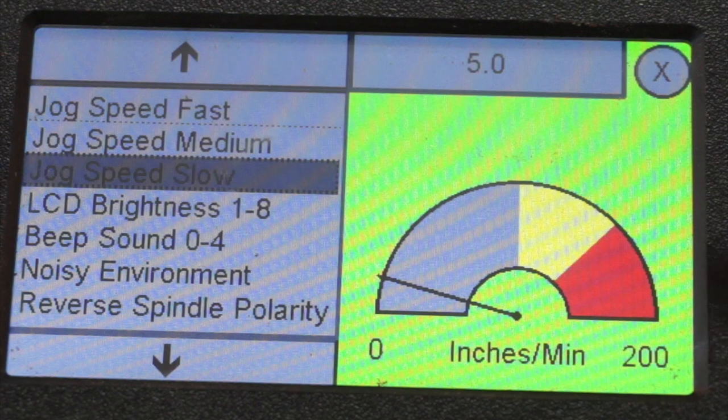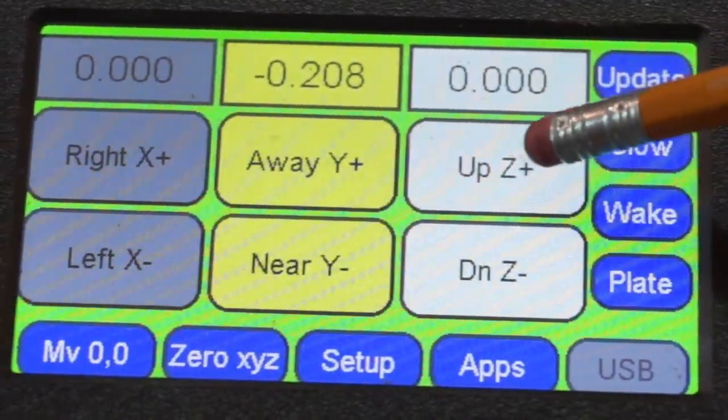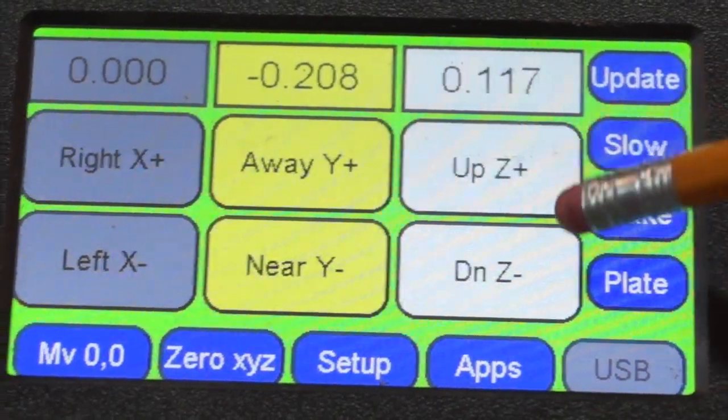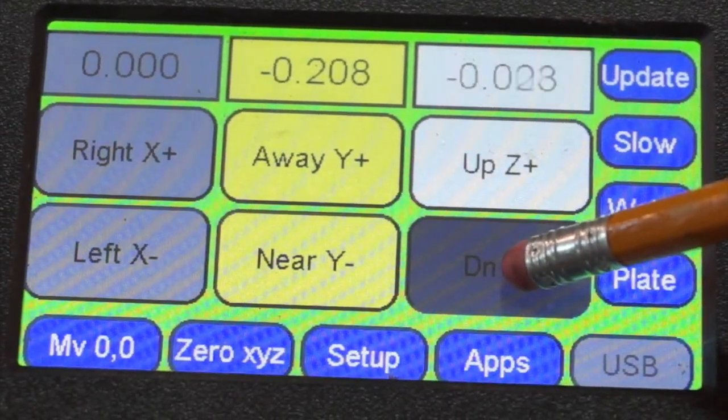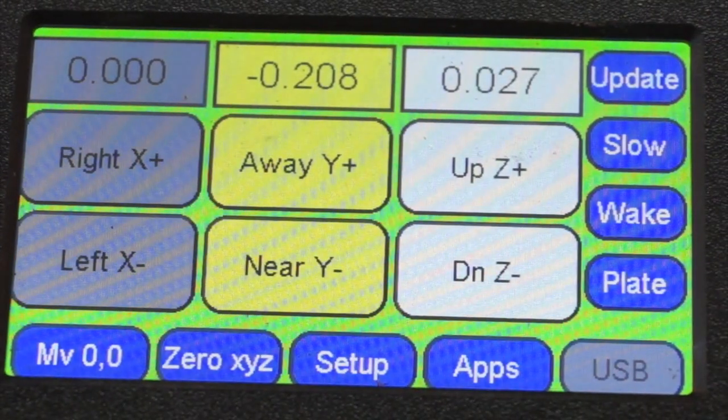And that's what I like. The factory setting is 10. I've changed this to 5 because I like a slower jog setting on slow. When I'm moving my Z up and Z down, I'm going to be doing it precisely. So that's how you set those.